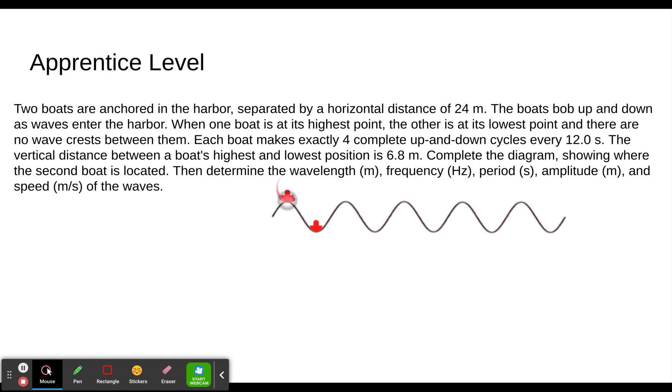The boats bob up and down as waves enter the harbor. When one boat is at its highest point, the other is at its lowest point. So one's at the crest and one's at the trough, and there are no wave crests in between them. That's all we need for our picture. And that's going to be the first thing you have to figure out. The first one's always at the highest point. And here we have the lowest point, and notice there's no crest in between. If it said one crest in between, it would be over here. We'll get to that in the next example. So this is the situation. One boat's there, one boat's there. And remember, we already know they are 24 meters apart horizontally.